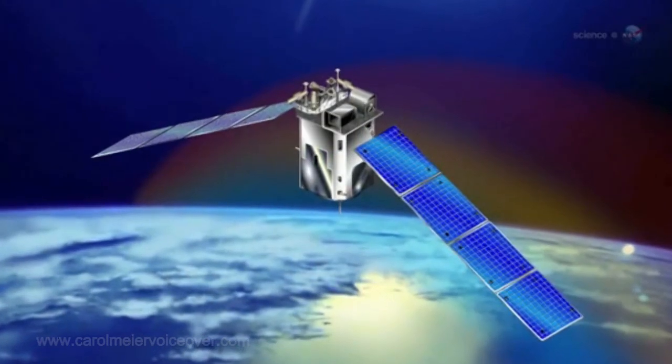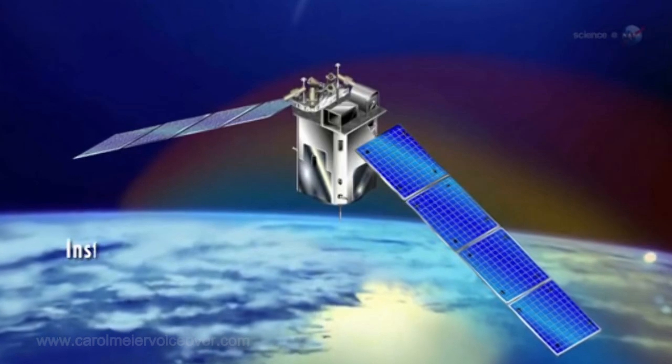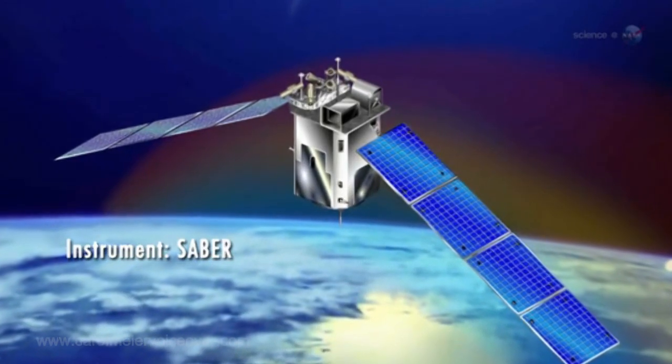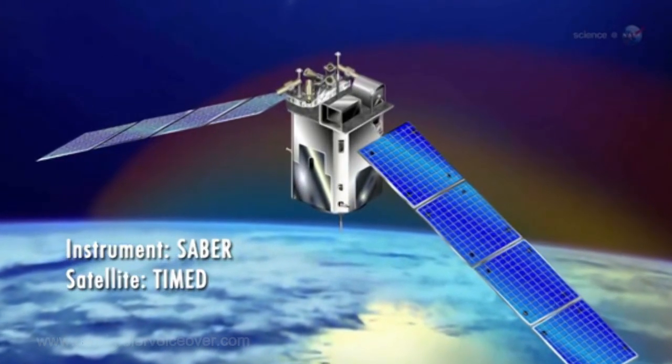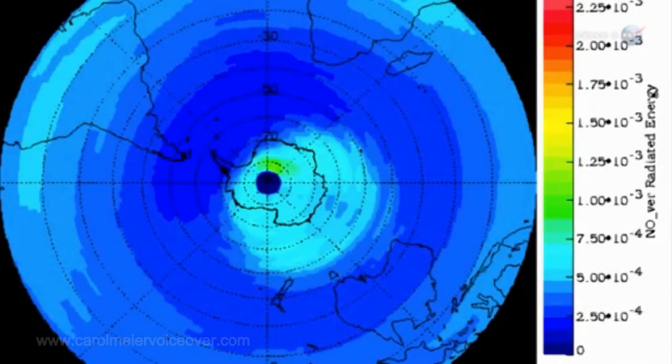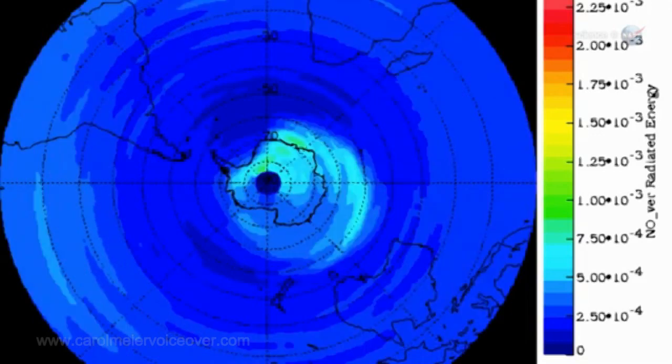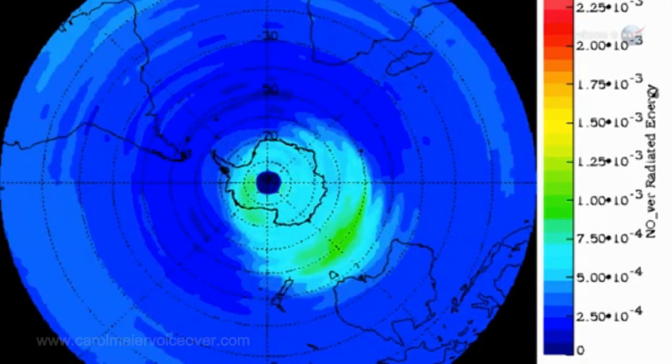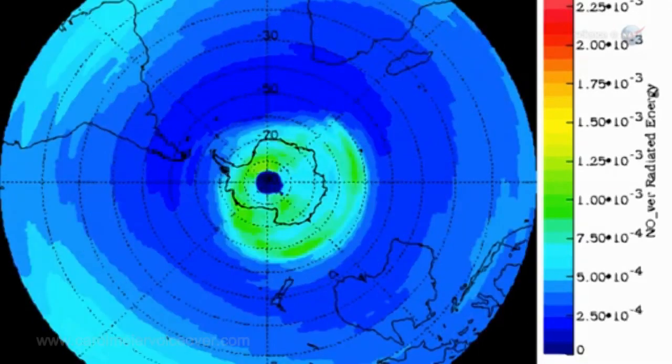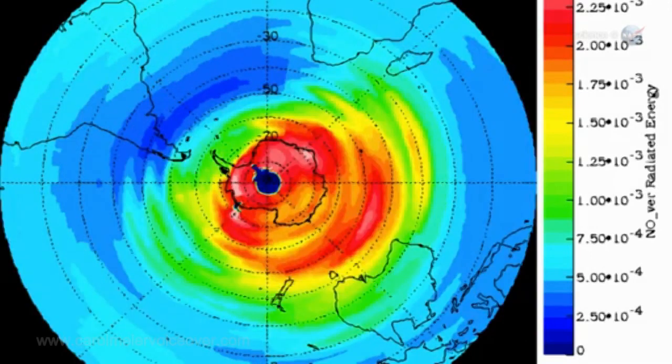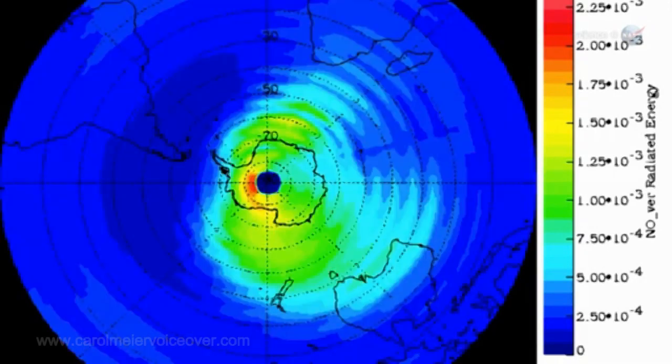Malinchak is the associate principal investigator for the SABR instrument on board NASA's TIMED satellite. SABR monitors infrared emissions from Earth's upper atmosphere, in particular from carbon dioxide (CO2) and nitric oxide (NO), two substances that play a key role in the energy balance of air more than 100 kilometers above our planet's surface.